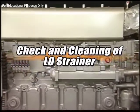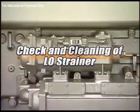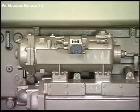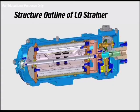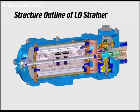The lube oil strainer fitted on this engine is the automatic backwashing filter. Lube oil is filtered by running from the inside to the outside of the strainer element. The cleaning nozzle rotates during operation by a turbine driven by lube oil pressure. At the tip of the nozzle, the flow of lube oil is reversed, dirt is discharged, and filtration and cleaning are constantly repeated.